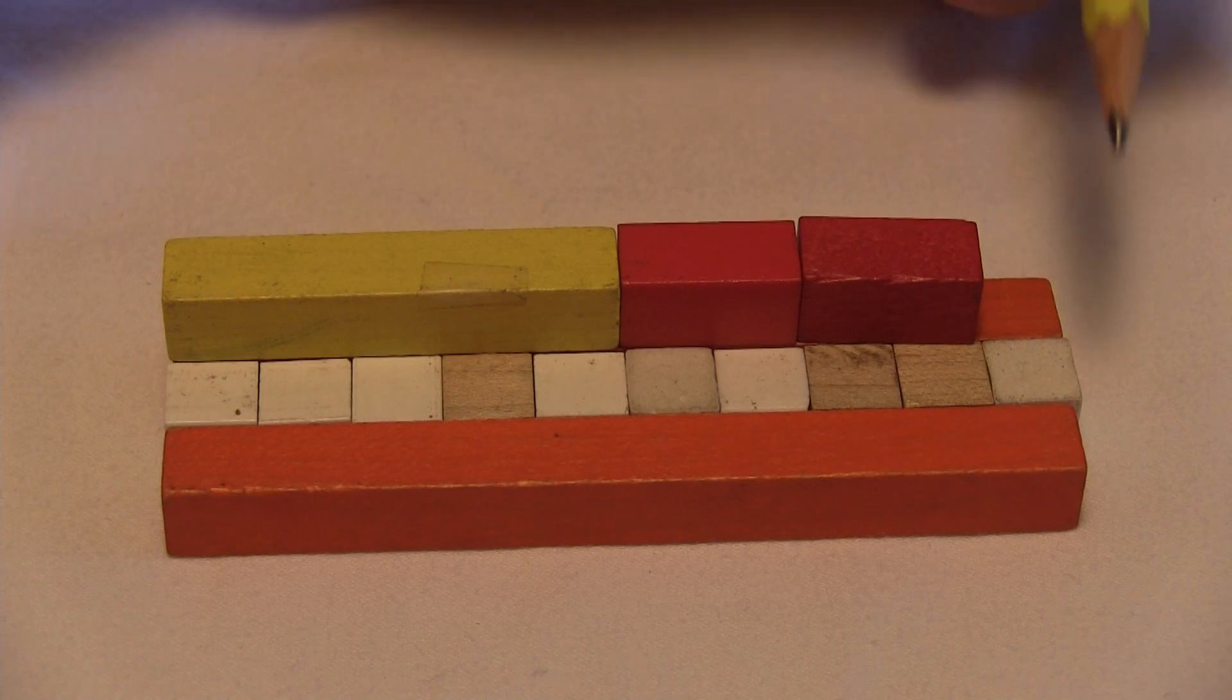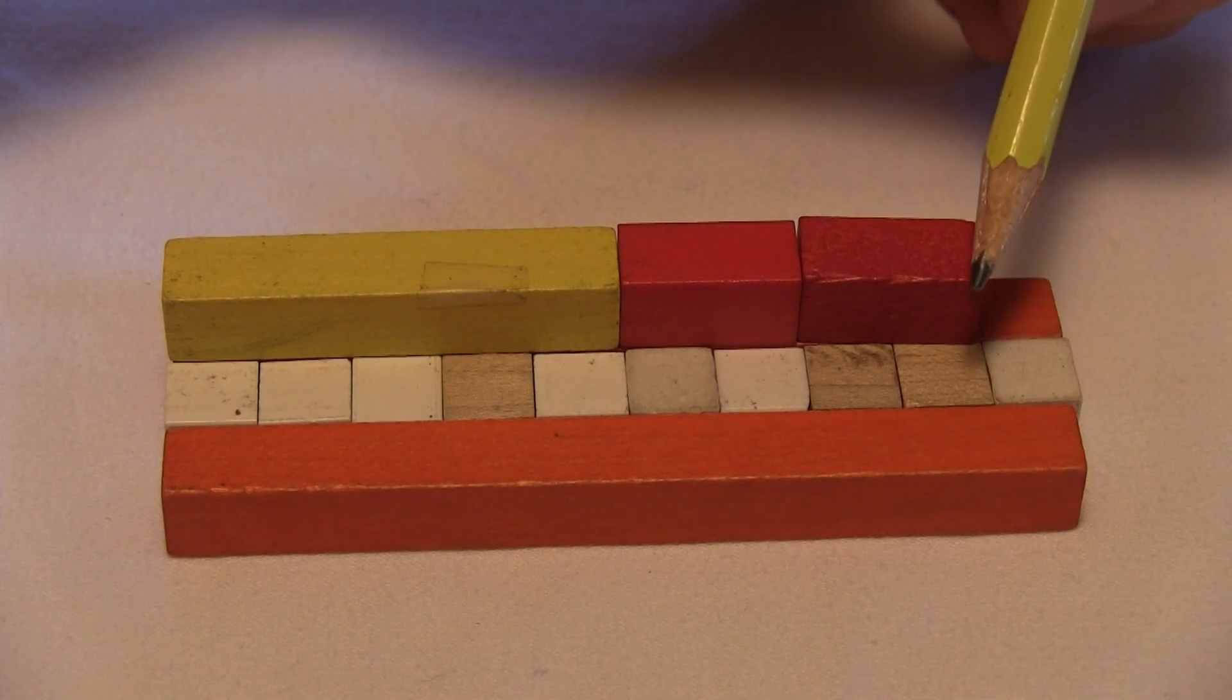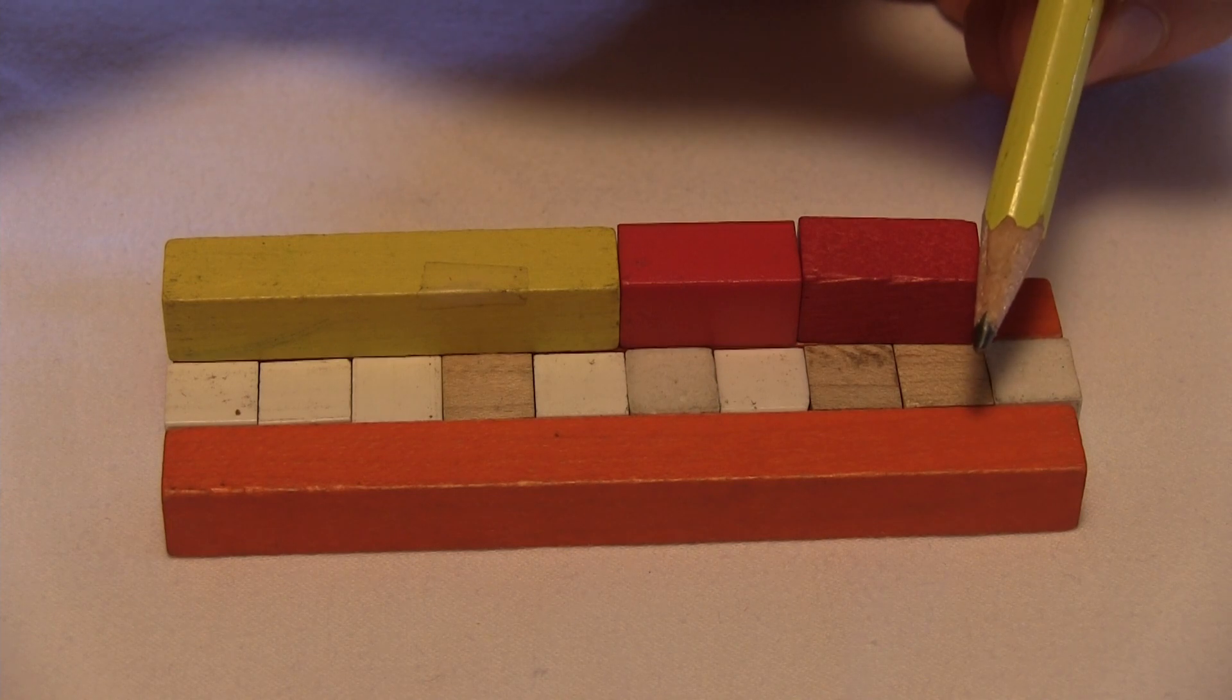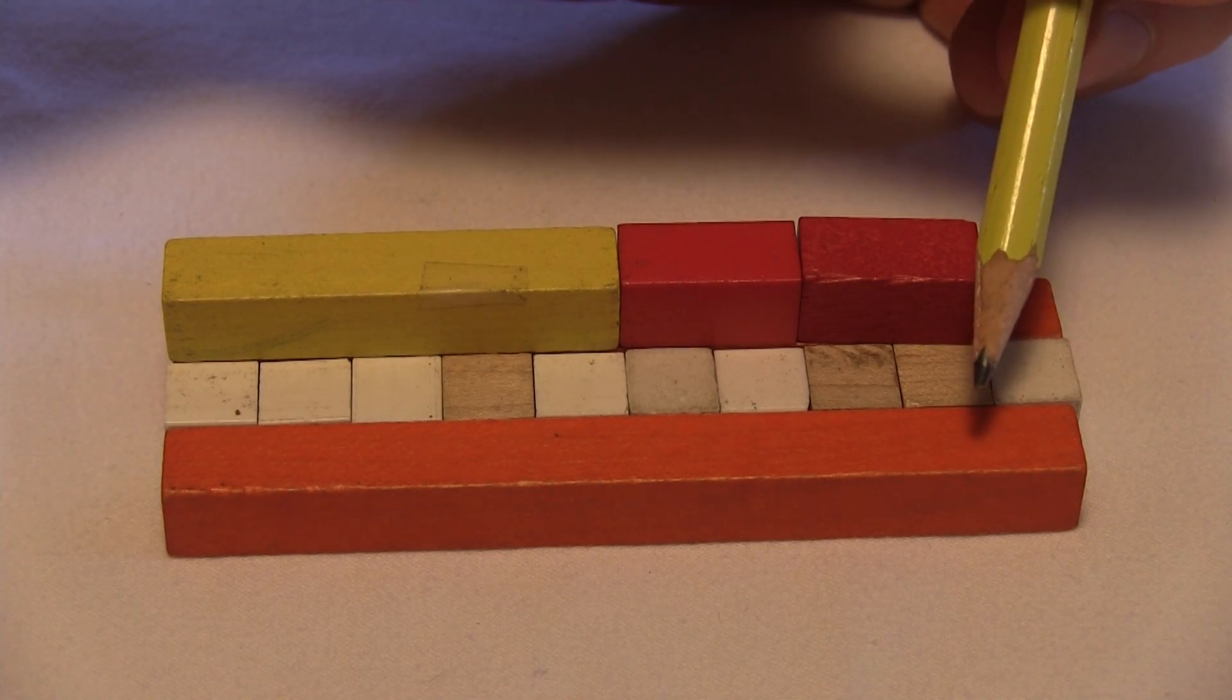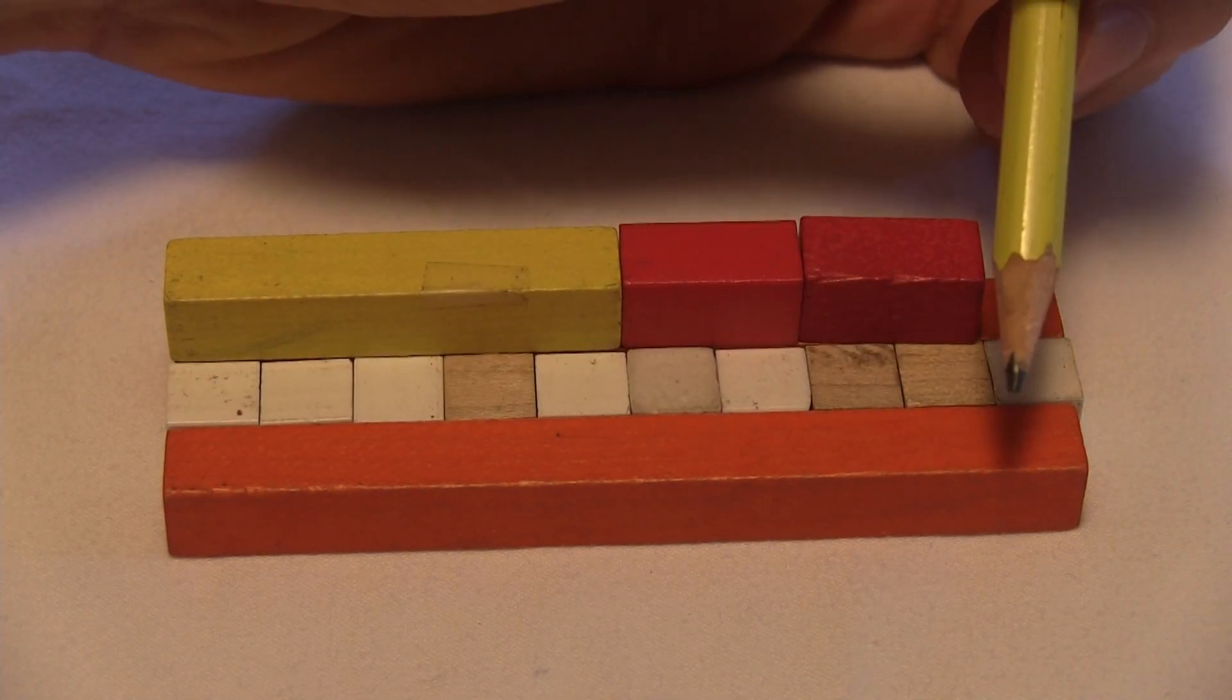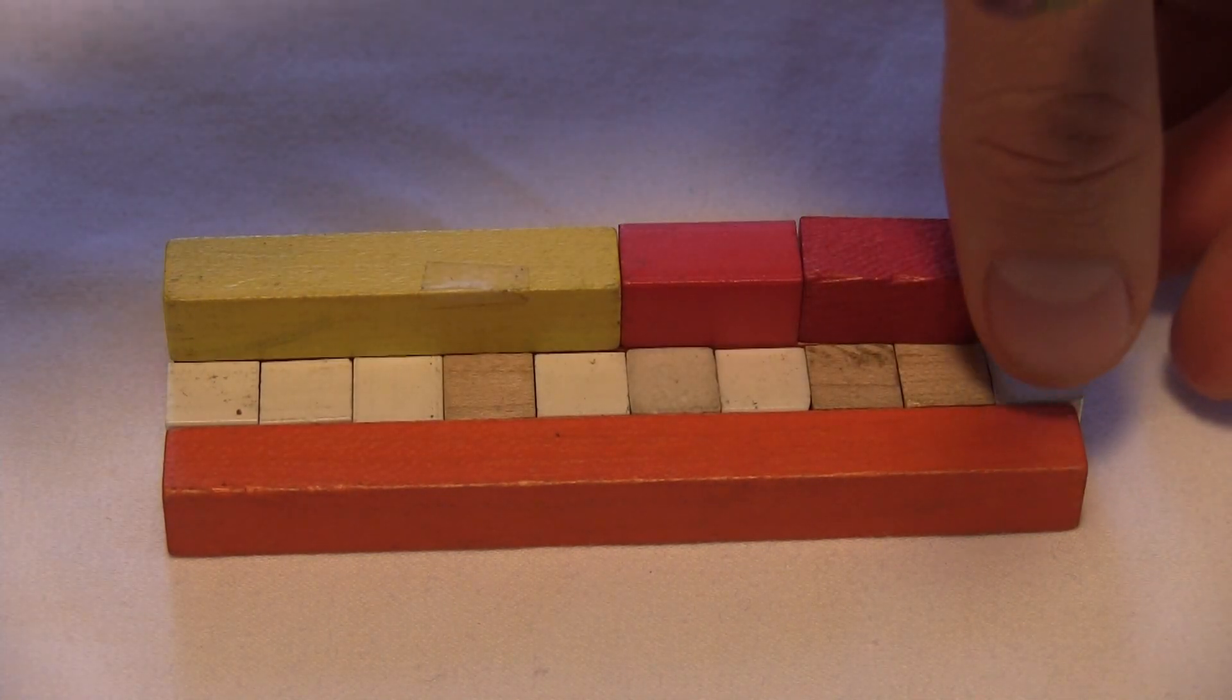We can use that to compare because this bar right here ends at the same spot as this bar right here. And we did figure out exactly how far this one is. It is almost all the way to one whole. It is all but one of ten.